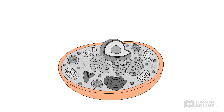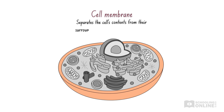Let's start with the outermost layer of an animal cell. This is the cell membrane, which is a protective structure that separates the internal components of the cell from the external environment. The cell membrane is selectively permeable — in other words, it allows some substances to enter the cell but prevents others.